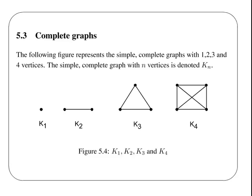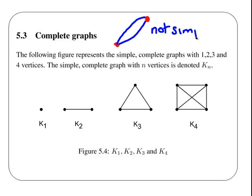To give a quick example of a scenario which is not a simple graph: suppose we have two vertices and suppose there are two different edges between them. In that case, that would not be simple. So in each of our cases, between each pair of vertices there is only one edge.